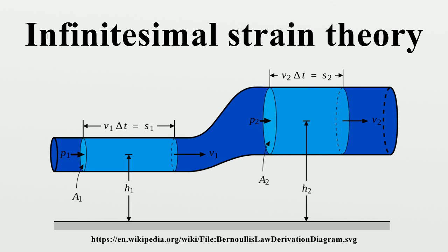The engineering shear strain, or the change in angle between two originally orthogonal material lines, is defined as follows. From the geometry of figure 1, we have for small rotations, and for small displacement gradients. Thus by interchanging the indices, it can be shown that similarly for the xz and yz planes we have the tensorial shear strain components of the infinitesimal strain tensor expressed using the engineering strain definition.